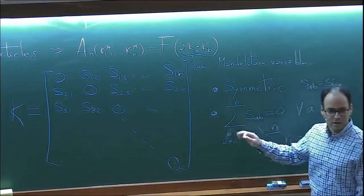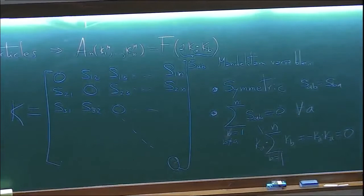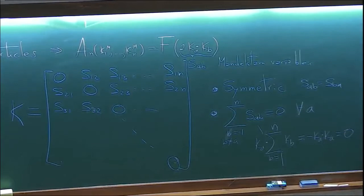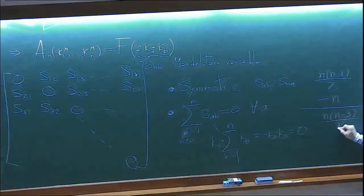An exercise for you: prove that any matrix satisfying these two conditions gives rise to valid kinematic data. Let's do some counting. Being symmetric means we have N times (N minus 1) divided by 2 degrees of freedom. Here we have N constraints. Putting this into Mathematica gives N times (N minus 3) over 2.